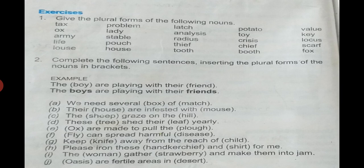Complete the following sentences, inserting the plural forms of the nouns in brackets. Now you have given a singular noun in brackets, you have to write them in the plural form. We need several boxes of matches. In the sentence you have to write boxes, E-S, B-O-X-E-S, boxes comma matches. You have to do the rest of the sentences similarly.